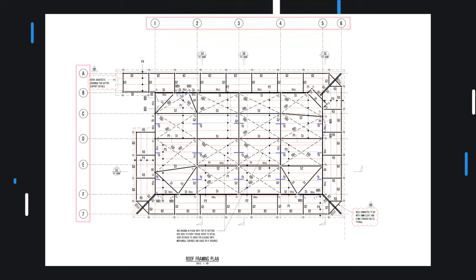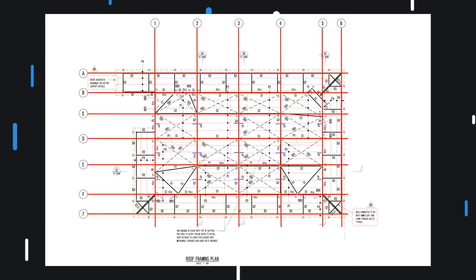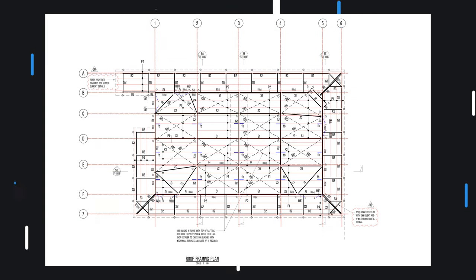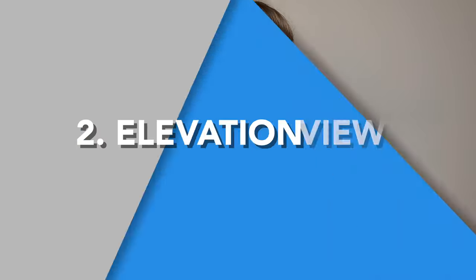One more thing to add about plan view drawings that show floor plans is that they often have grid lines added to them. These grid lines are something you should definitely take notice of because they can be very helpful when you're trying to orientate yourself when looking at drawings from a different point of view.